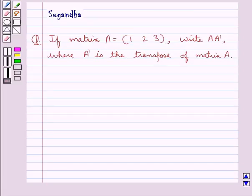Hello and welcome to the session. In this session we discuss the following question which says if matrix A is equal to 1, 2, 3, which are the elements in one row of the matrix A, write AA dash where A dash is the transpose of matrix A.